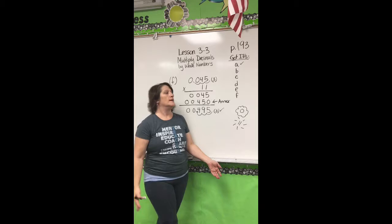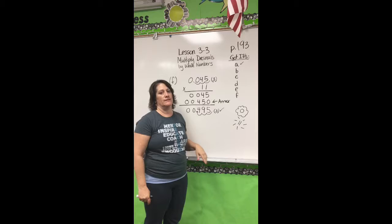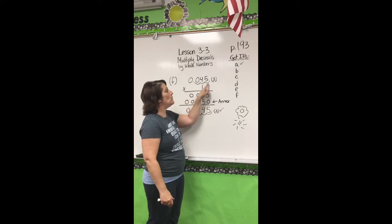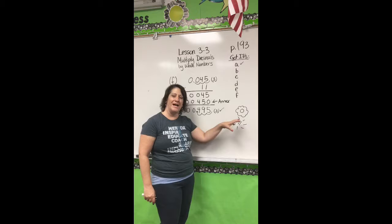Look at my board. I went ahead and went through all the steps. I did do my estimation guessing work first. So I took my decimal factor and rounded it — yes, because it's below 5, I rounded it to 0. So 0 times 11 would give me 0. I put a pin on it over here just so I wouldn't forget what my check-for-reasonableness estimation is for later.